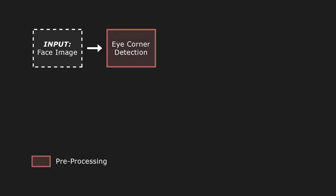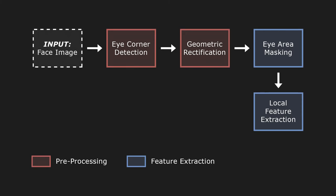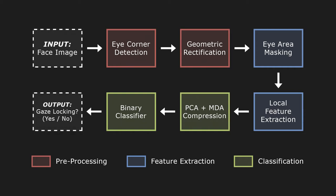Given an image, we start by locating the eyes with a commercially available face detector and transforming them to a standard coordinate frame. Then we mask out the eye's surroundings and assemble low-level features from the eye's pixel intensities. Finally, we use a standard binary classifier to discriminate among these features, outputting a simple yes or no.